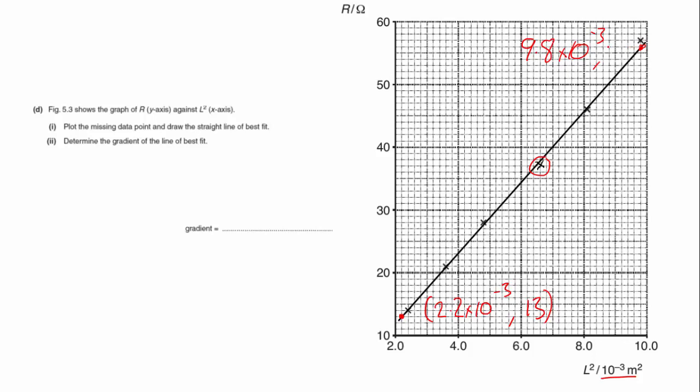So the gradient is the difference in y over the difference in x. y is going to be 62 minus 13, and the difference in x is going to be 9.8 minus 2.2 times 10 to the minus 3.